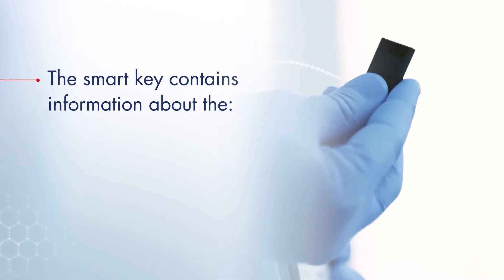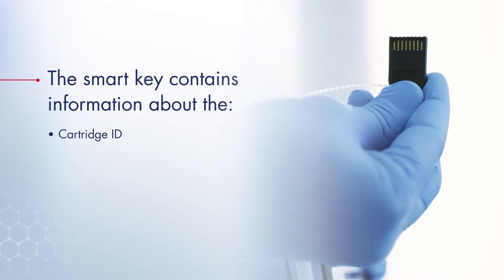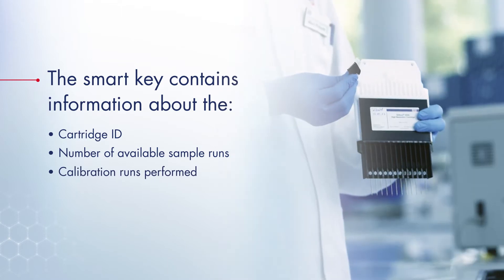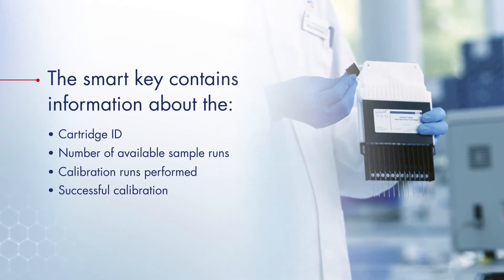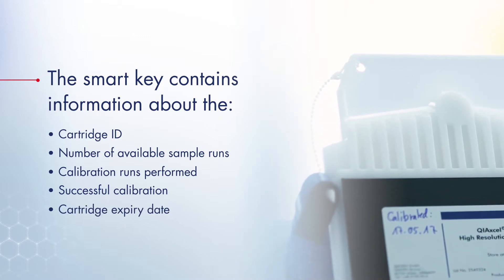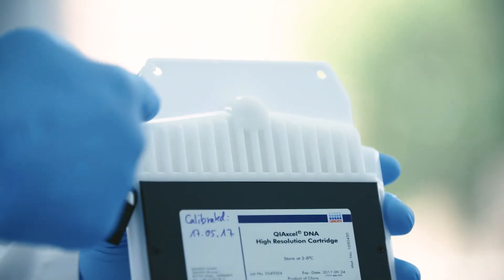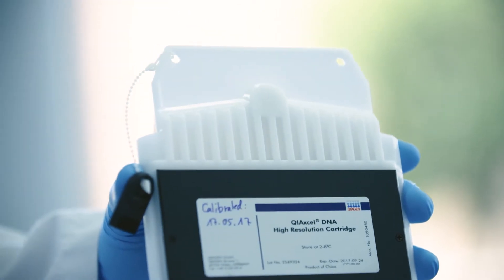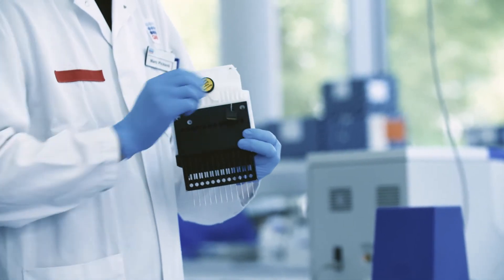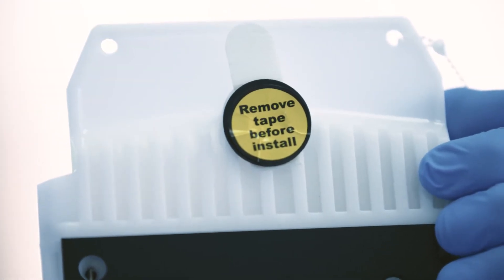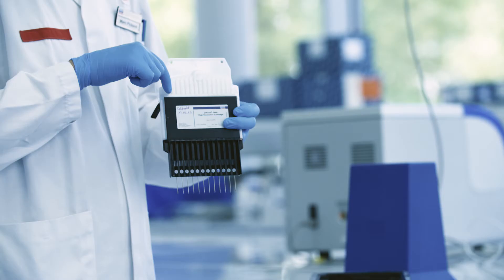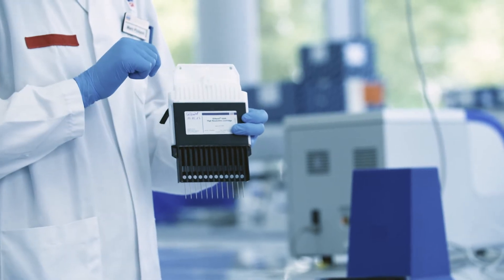The smart key contains information about the cartridge ID, the number of available sample runs and calibration runs that have been performed, the successful calibration with the Kaixcel Advanced and the cartridge expiry date. The gel reservoir of the cartridge contains the gel which is used for the run. The gel is replaced for each new run. Nitrogen pressure is applied via the purge port, enabling the instrument to replace the used gel from the previous run with fresh gel for the next run.